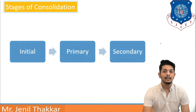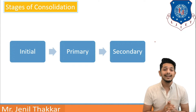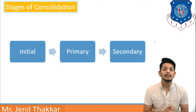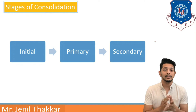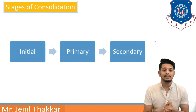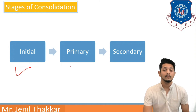Let us understand the stages of consolidation: initial, primary, and secondary stages. When a partially saturated soil mass is subjected to external loading, it gets compressed and a decrease in volume is seen due to expulsion of air particles and compression of solid particles. This small decrease in volume of the soil mass is known as immediate settlement or initial consolidation.